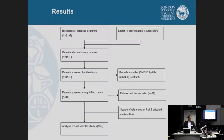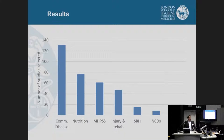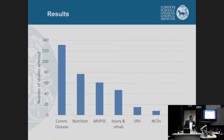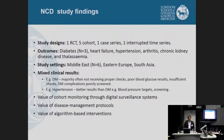We retrieved over 6,000 studies, but specifically in our search for NCDs we came up with eight — good news for us, bad news for everyone else. To put it in a broader context, these are the results we found for health interventions across other health topics: many more for communicable disease, nutrition, and even mental health and psychosocial support; far less for sexual and reproductive health and water and sanitation. NCDs sit firmly at the lower end, and overall there isn't that much evidence globally on any of these topics.